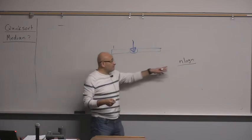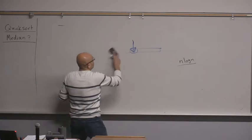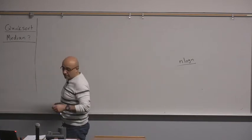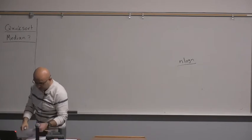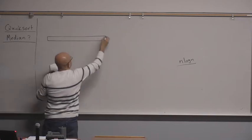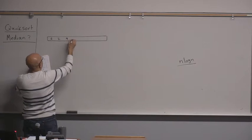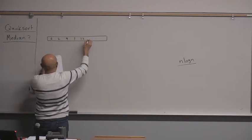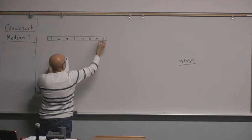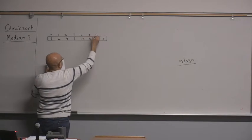The method is, in fact, very similar to quicksort. So how does this work? This is the example that we will be using: 6, 2, 9, 1, 12, 5, 10, 3.